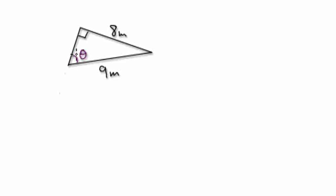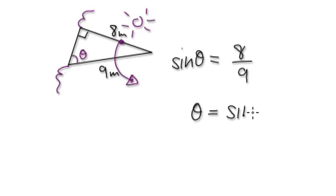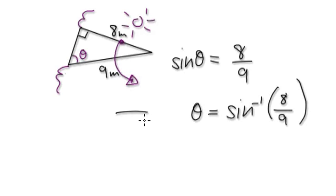Work out theta here. The C would be here, the sun would be here, so we need sine. Sine of the angle equals 8 over 9. Inside your mind, apply inverse sine to both sides — so theta equals inverse sine of 8 over 9. You can leave it as this.